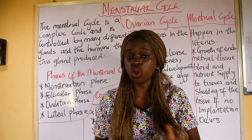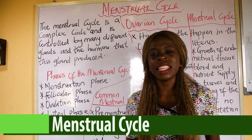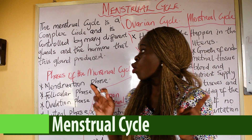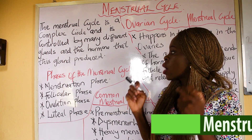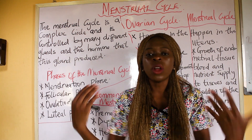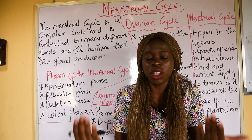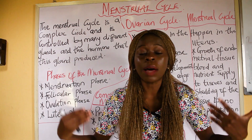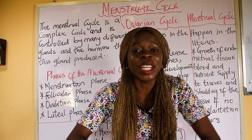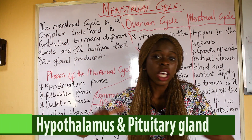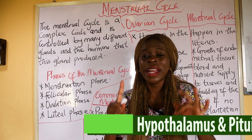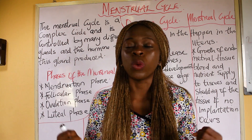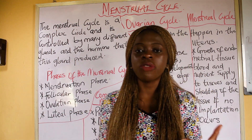Today I am going to be talking to you about the Menstrual Cycle. The Menstrual Cycle is a complex cycle controlled by many different glands and the hormones that these glands produce. A lot of us, especially women, we experience menstrual flow and feel it's just normal — but there are a lot of things going on in the body. Many hormones are being released into circulation. The hypothalamus is involved, the pituitary gland is also involved. That is why it is called a Complex Cycle. There are various phases involved in the Menstrual Cycle.